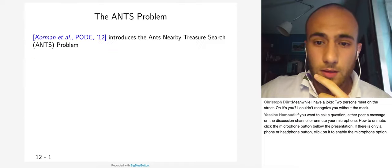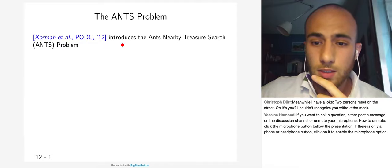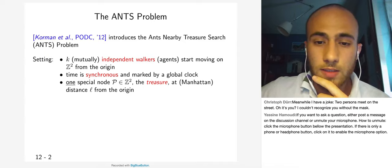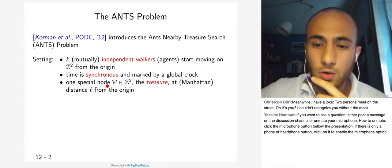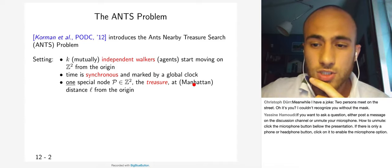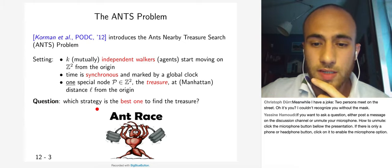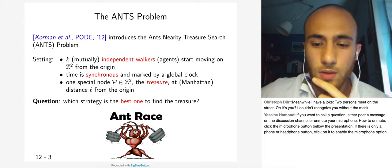The setting is the HANDS problem, first introduced by Amos Korman and co-authors at PODC 2012, with the name 'nearby treasure search problem.' In this problem, there are K mutually independent workers moving on Z^2 from the origin. Time is synchronous, marked by a global clock. There is just one special node — the treasure — at Manhattan distance L from the origin. The question is: which strategy is best to find the treasure?